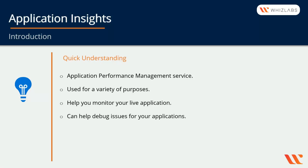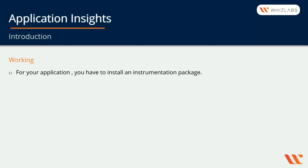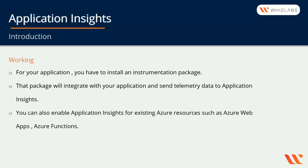So how does Application Insights actually work? If you want to incorporate it with your application — for example, an ASP.NET or .NET Core web application — you first have to install an instrumentation package, which is the Application Insights SDK. This package integrates with your application and sends telemetry data to Application Insights. You can also enable Application Insights for existing Azure resources such as Azure Web Apps or Azure Functions.